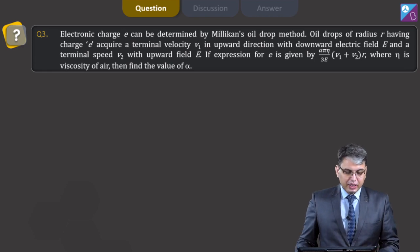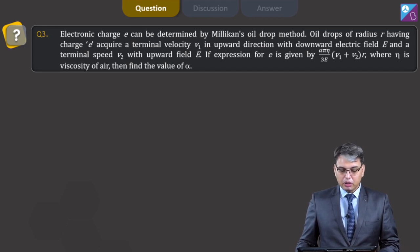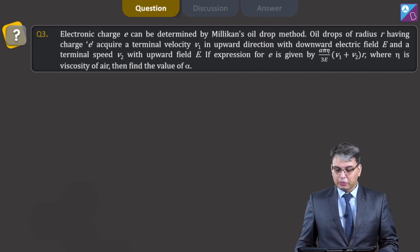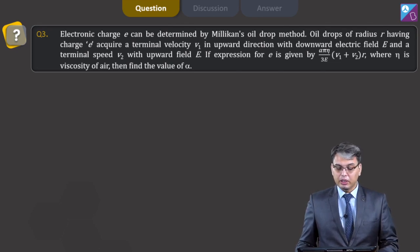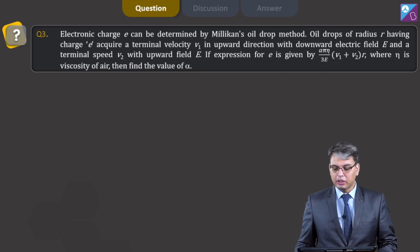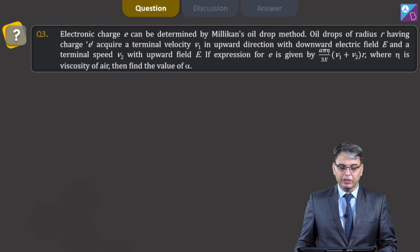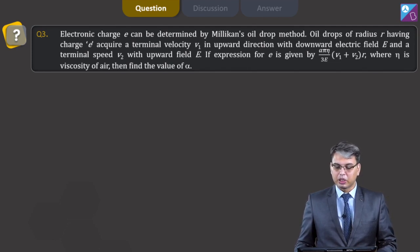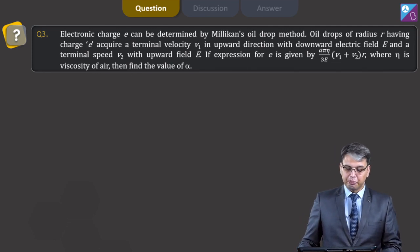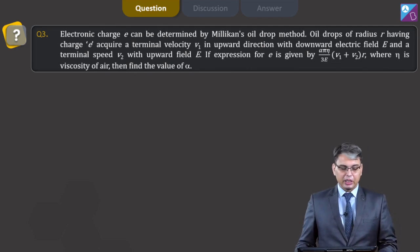Moving on to question number 3. It says electronic charge e can be determined by Millikan's oil drop experiment. Oil drops of radius r having charge e acquire a terminal velocity V1 in the upward direction with a downward electric field E, and a terminal velocity V2 with upward electric field E. If the expression for small e is given by alpha pi eta upon 3E into (V1 plus V2) into r, where eta is the viscosity of air, then find the value of alpha.